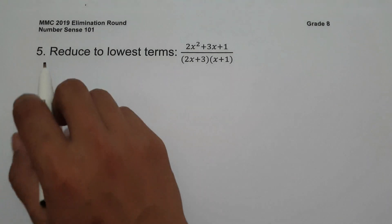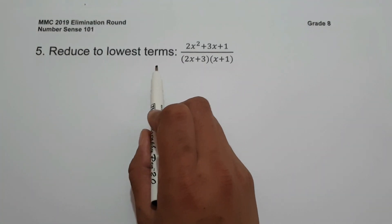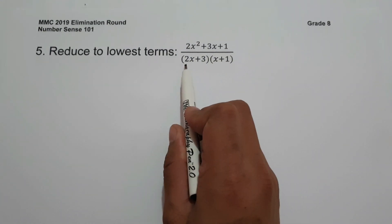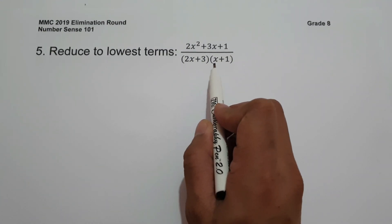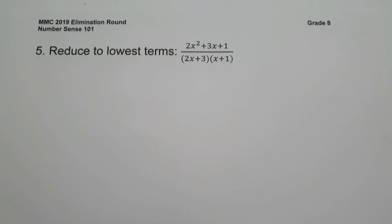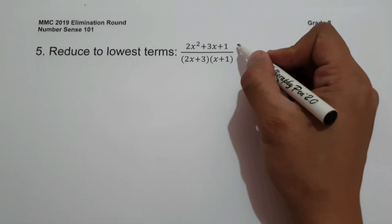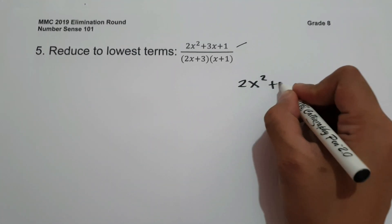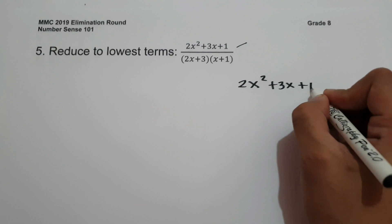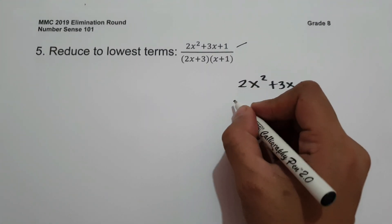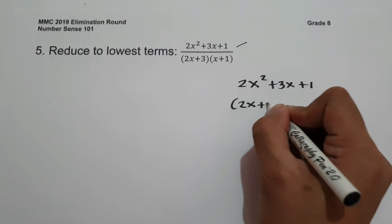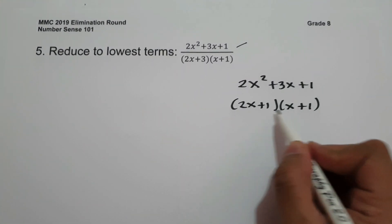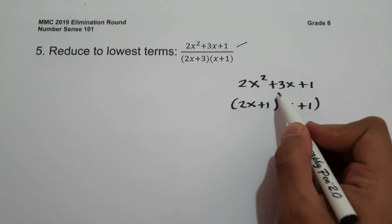On number 5, reduce to lowest terms: (2x² + 3x + 1) all over (2x + 3)(x + 1). To simplify, we factor the numerator 2x² + 3x + 1, which gives (2x + 1)(x + 1). You can verify: multiplying gives 2x² + 3x + 1.